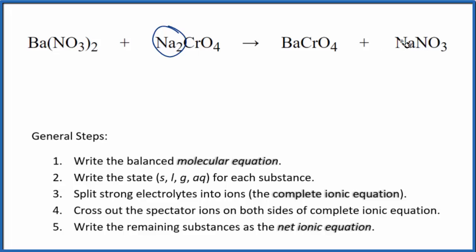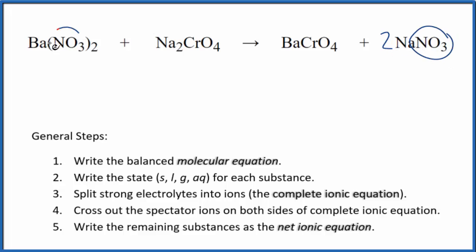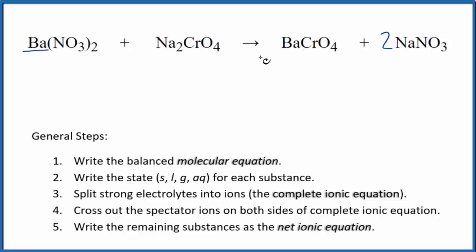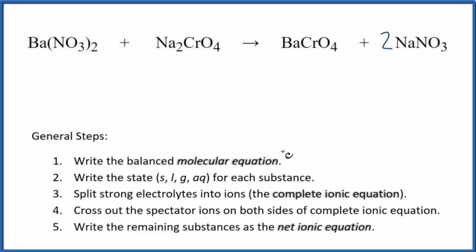I have two sodium atoms here and just one here, so let's put a two here. Now I have two sodiums, two nitrates here, a barium on each side, and a chromate on each side. So this is the balanced molecular equation.